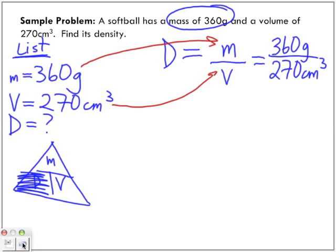So notice the units. The units do not cancel out. So the units we're going to have are the two sets of units, grams per centimeters cubed. And we know that density is a ratio of mass over volume. So when we divide them, we get D is equal to 1.333, and it pretty much repeats itself, grams per centimeters cubed.